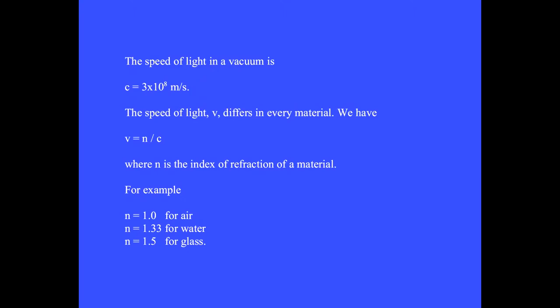The speed of light in a vacuum is given by C equals 3 times 10 to the 8th meters per second. The speed of light V differs in every material. We have V equals C over N, where N is the index of refraction of a material.